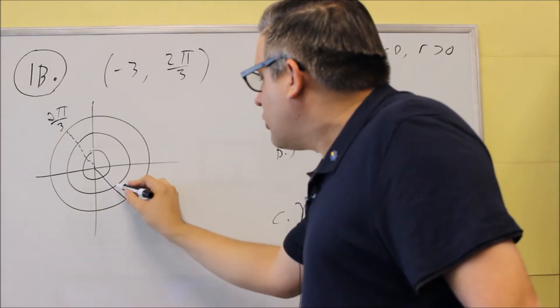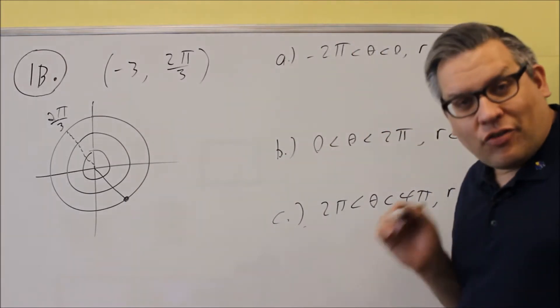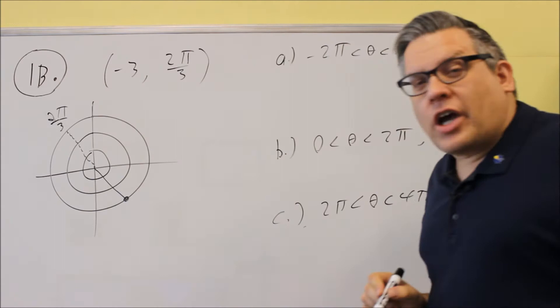and we count how many rings: 1, 2, 3 rings down here. So our point's going to end up there in the fourth quadrant. So we went to 2π over 3, reversed it, and then we got that.